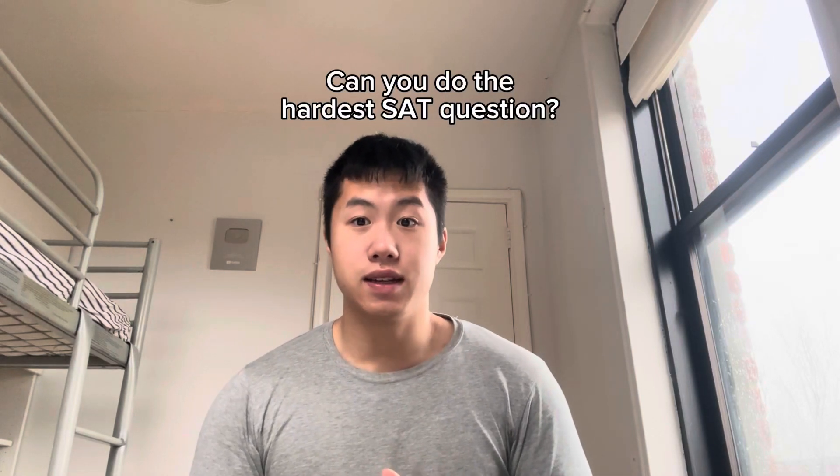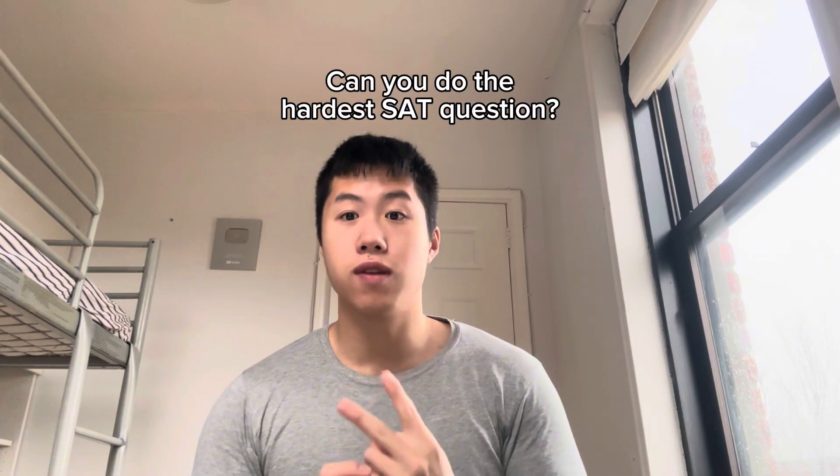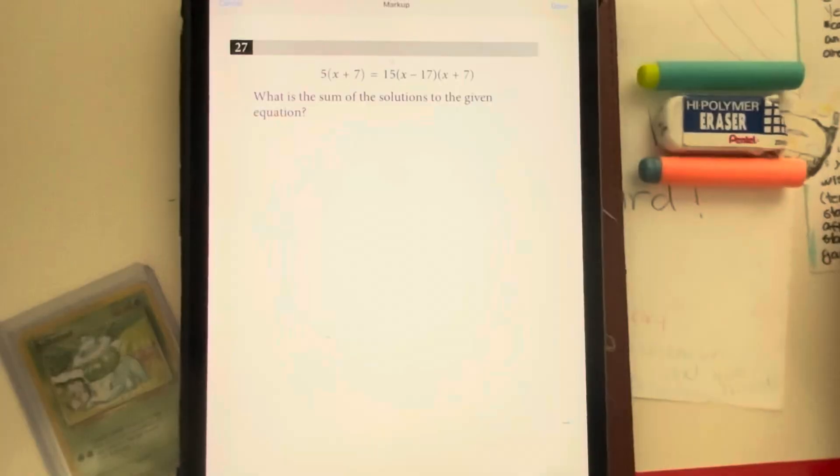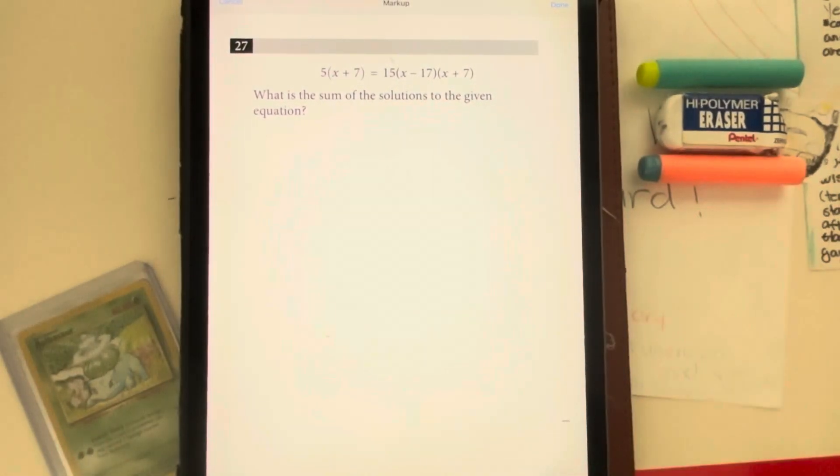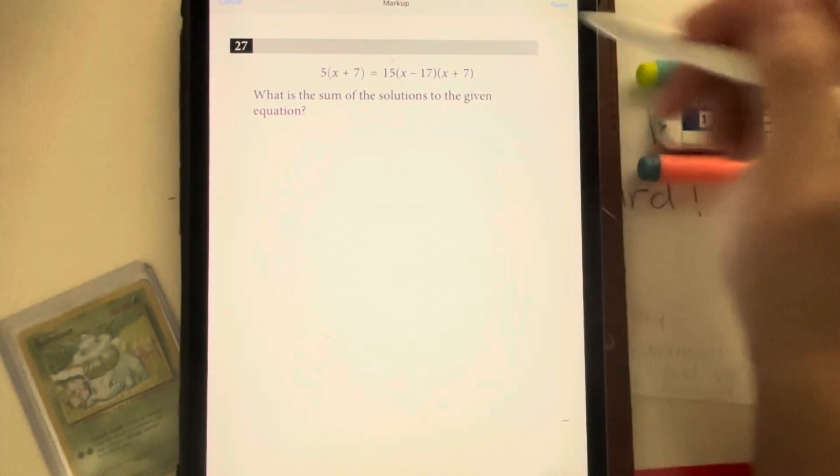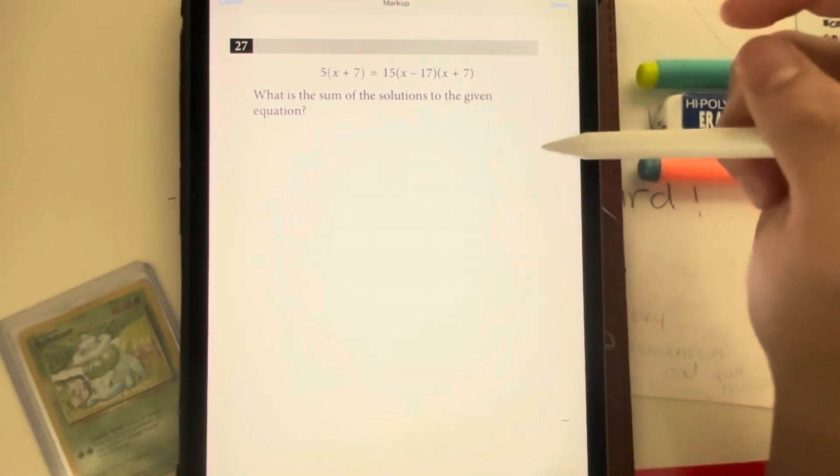I've looked over thousands and thousands of SAT questions and these two are two of the hardest ones. Enjoy. Question number 27. What is the sum of the solutions to the given equation? So first I'm going to try to simplify everything so I can create a quadratic or just a simple equation.